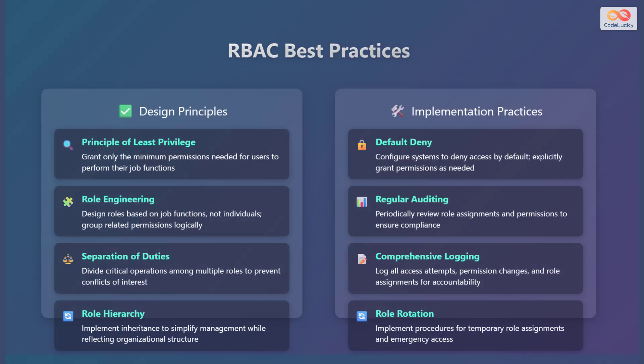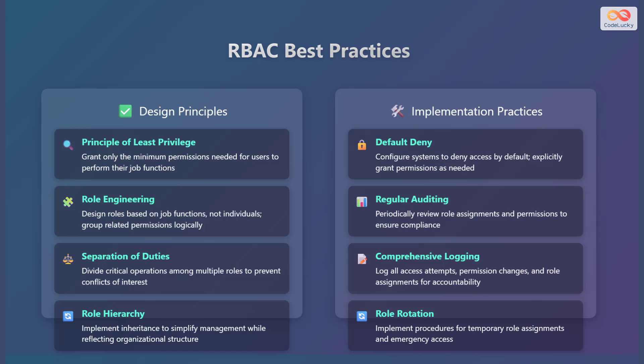Key design principles for RBAC best practices include the principle of least privilege — granting only the minimum permissions needed for a user's job; role engineering — designing roles based on job functions and grouping related permissions; separation of duties — dividing critical operations among multiple roles; and implementing a role hierarchy to reflect the organizational structure. Key implementation practices include default deny, regular auditing, comprehensive logging of all access attempts, and role rotation — implementing procedures for temporary role assignments.